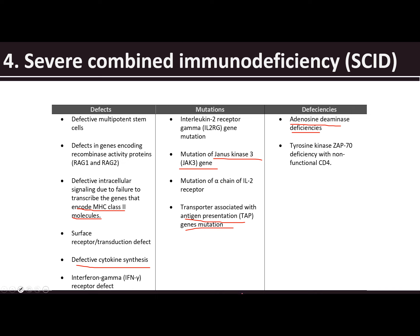Most of the multipotent stem cells are affected, and even the JAK system — very important in hematopoiesis — is affected, as well as your MHC class 2 molecules. So here you would have a problem with antigen presentation.